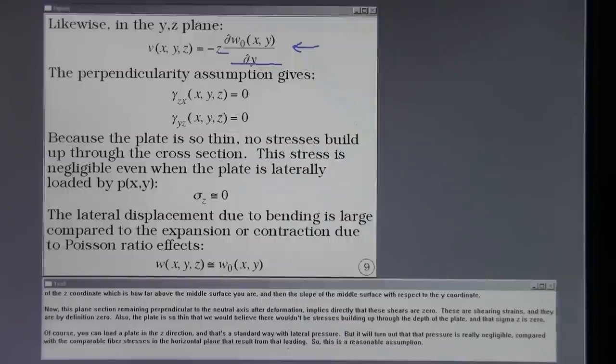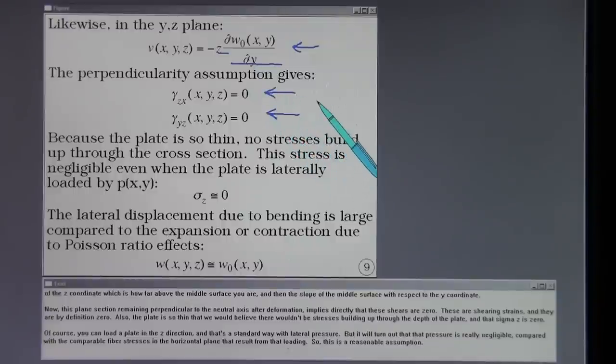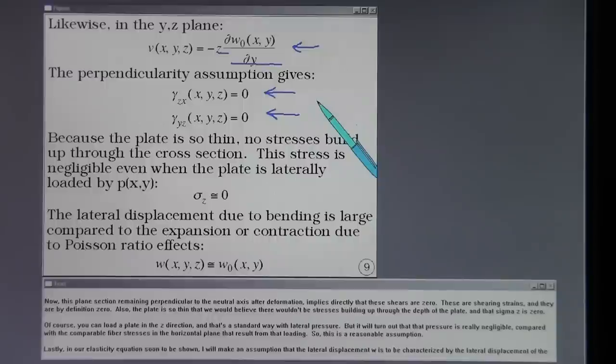Now this plane section remaining perpendicular to the neutral axis after deformation implies directly that these shears are zero. These are shearing strains, and they are by definition zero.